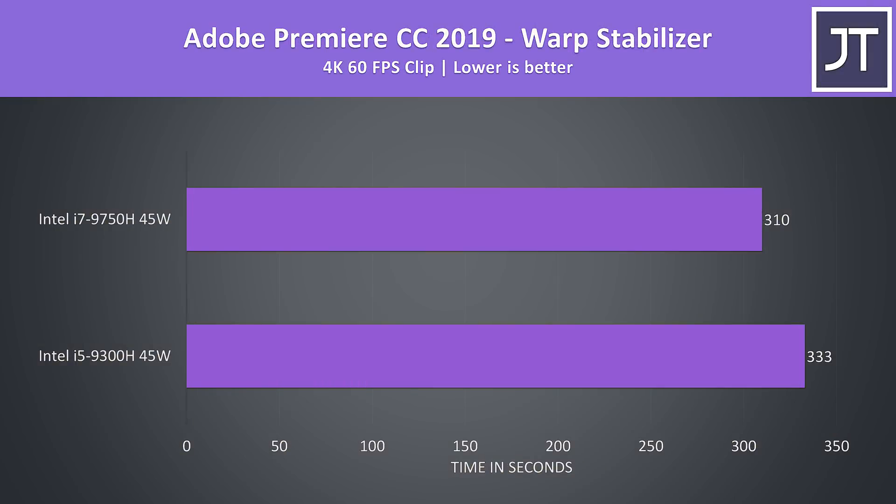I've also used the warp stabilizer effect in Adobe Premiere, which basically uses a single core to smooth out a clip. There was a larger performance difference here compared to exporting, with the i7 completing the task 7% faster than the i5, right in between the previous two Cinebench single core improvements.